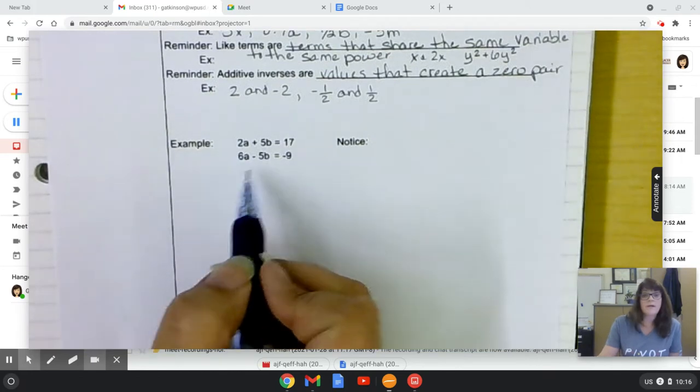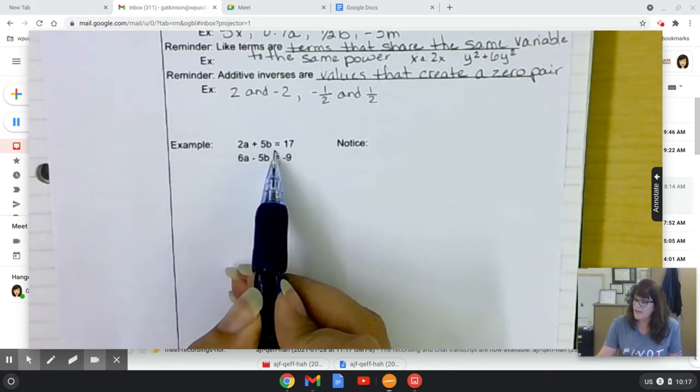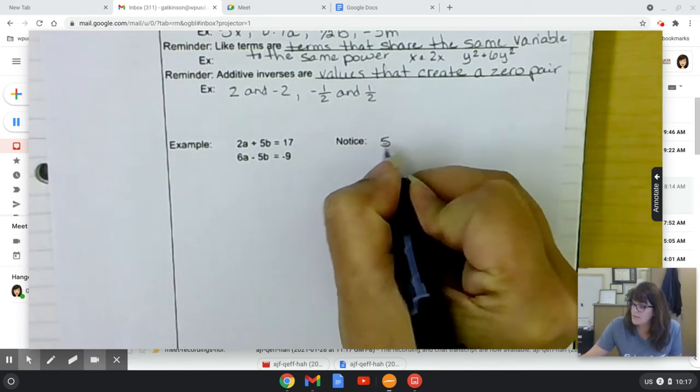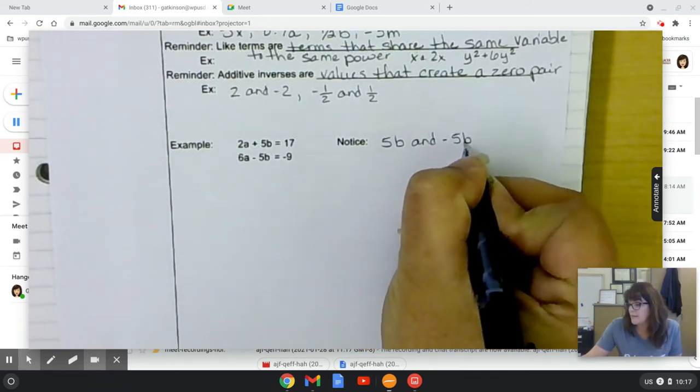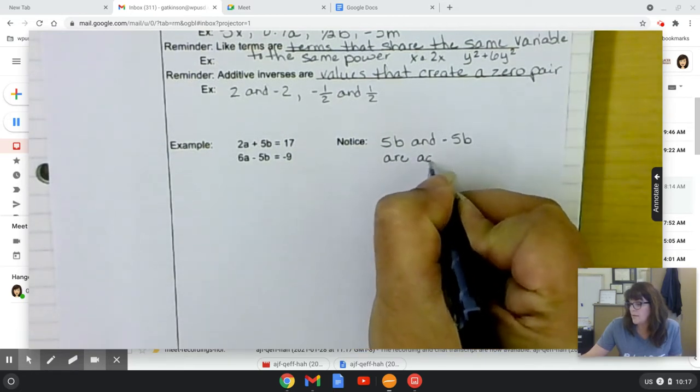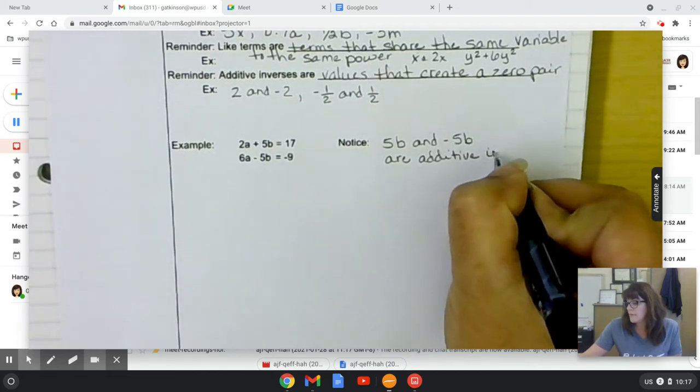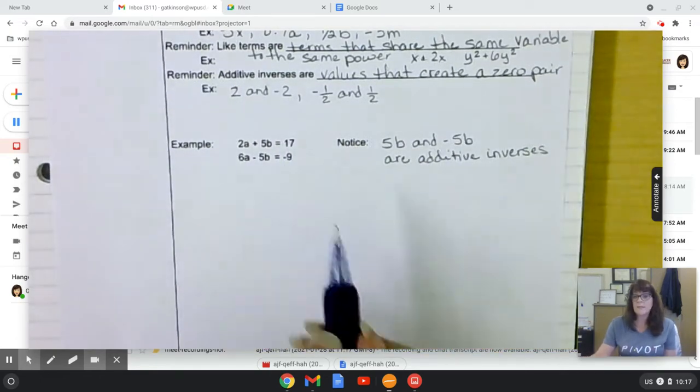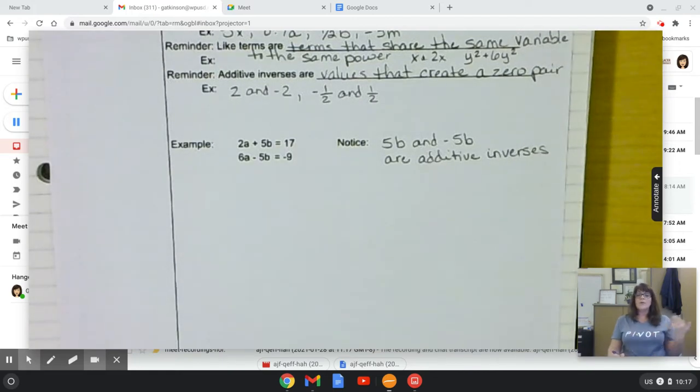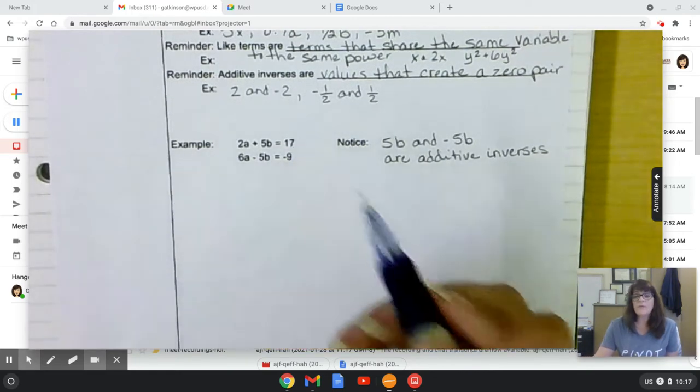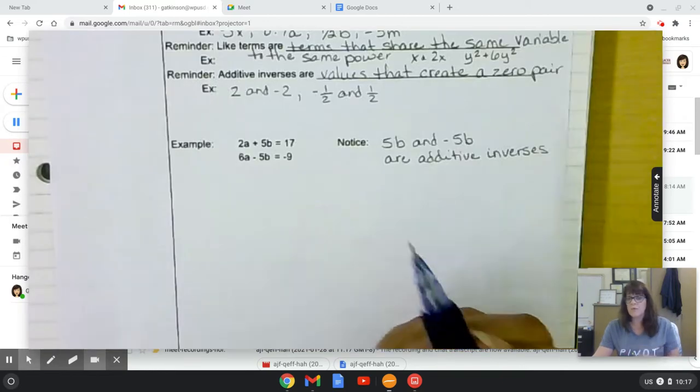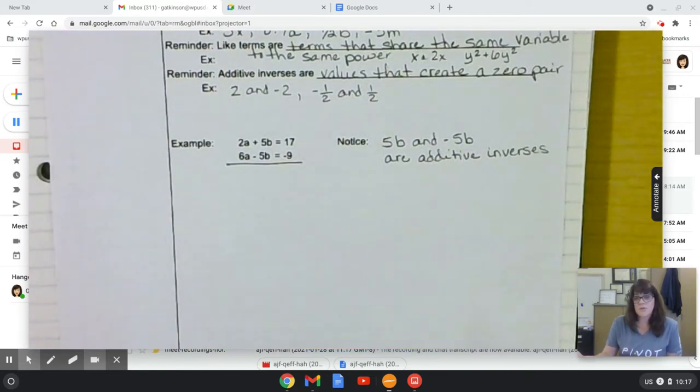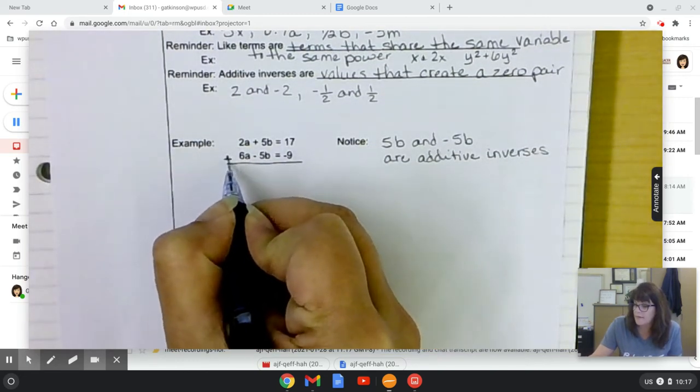All right. So let's take a look at this example. 2a plus 5b equals 17. 6a minus 5b equals negative 9. Notice that 5b and negative 5b are additive inverses. And for a couple problems, I'm going to have you identify them or write them down. So in order to solve this, we have a really great, very simple, straightforward method. I can draw a line underneath it, like it was going to be an addition or subtraction problem. And we're going to add these together.